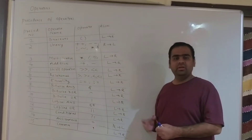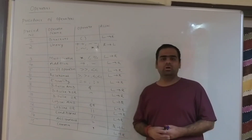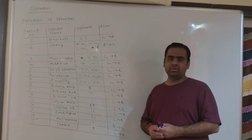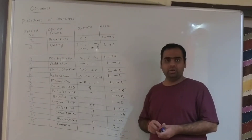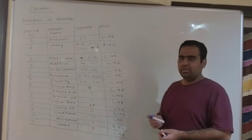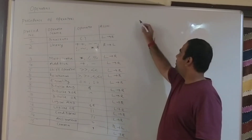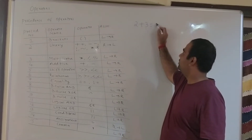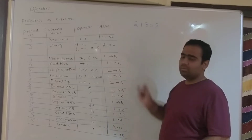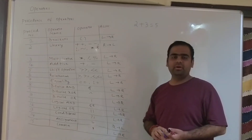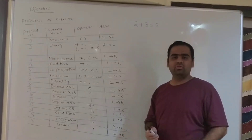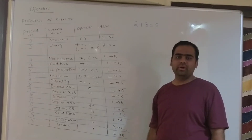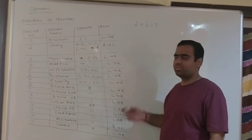Hello friends, in this video we will talk about operators. It is a type of token. In school we have studied some of the operators. For example, 2 plus 3 is equal to 5. Plus is an operator which acts on two operands, 2 and 3, to give the answer.